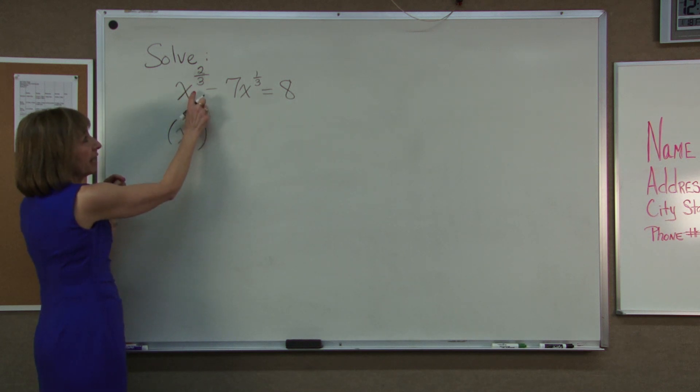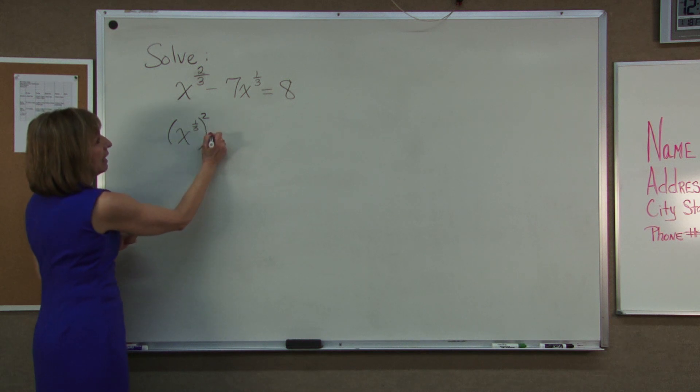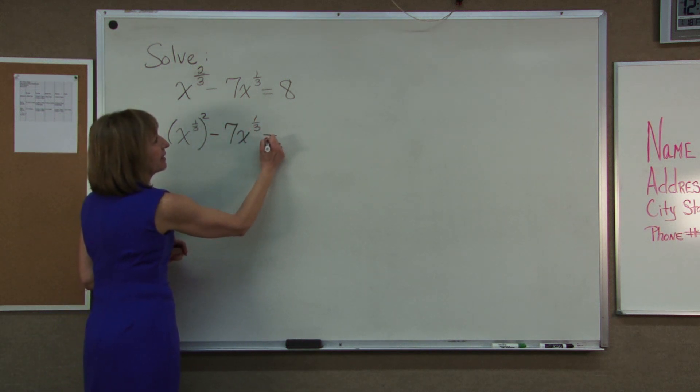So this expression x to the 2 thirds and this expression the quantity x to the 1 third squared really are exactly the same thing just written in a different way. And then I have minus 7x to the 1 third and that's equal to 8.